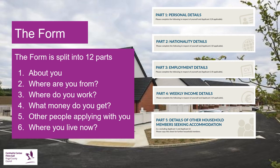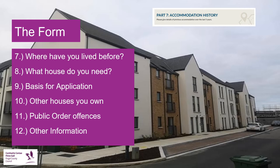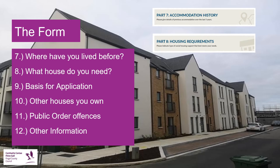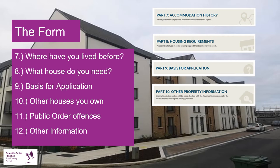Part six is current accommodation, asking about your current living situation. Part seven is accommodation history, asking for information on previous living situations. Part eight is housing requirements — what specific things you need in your house. Part nine is basis for application, ensuring you are applying in just one area and meet the requirements for that area. Part ten is other property information, asking about property or land you might already own.